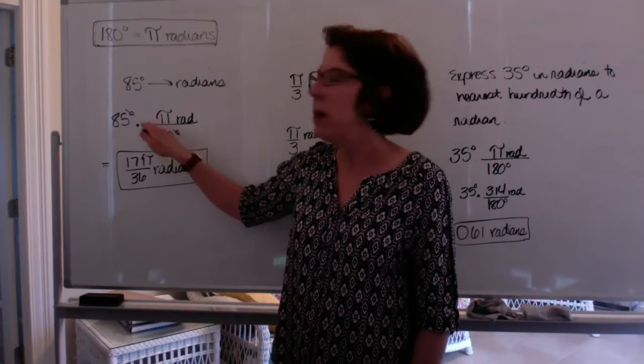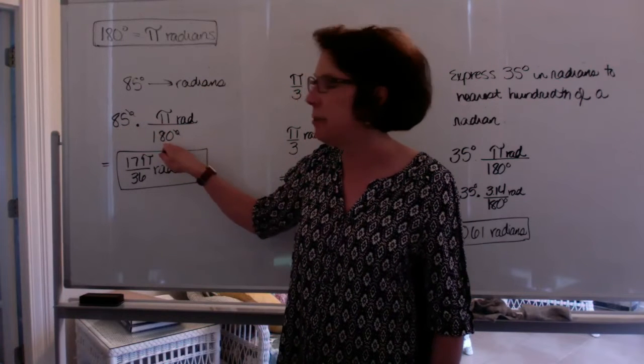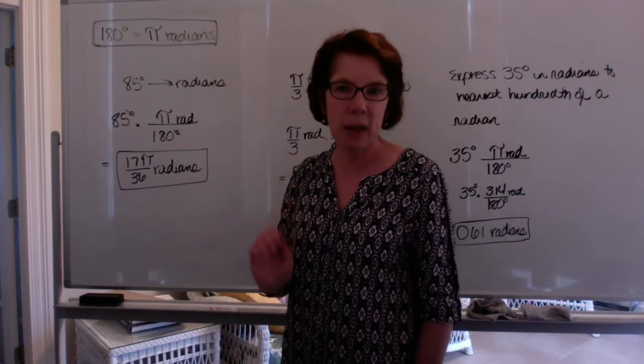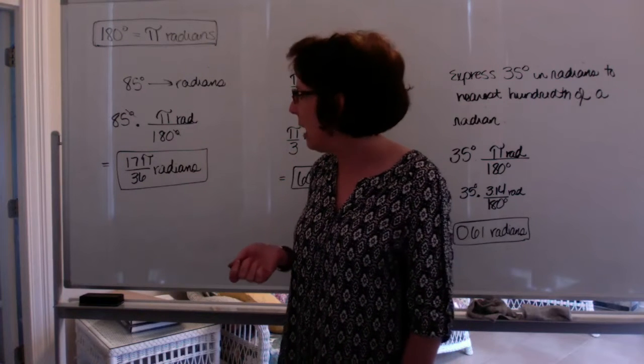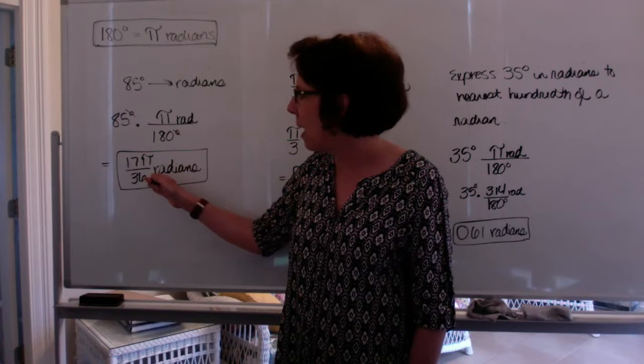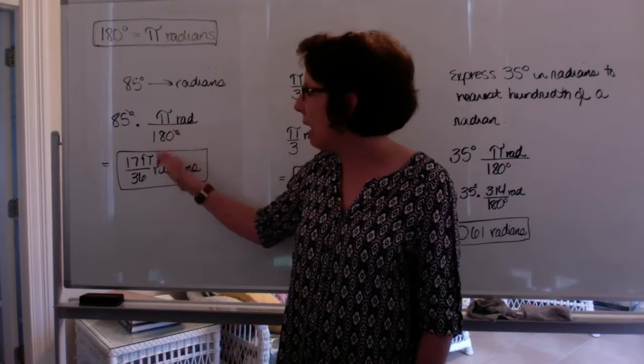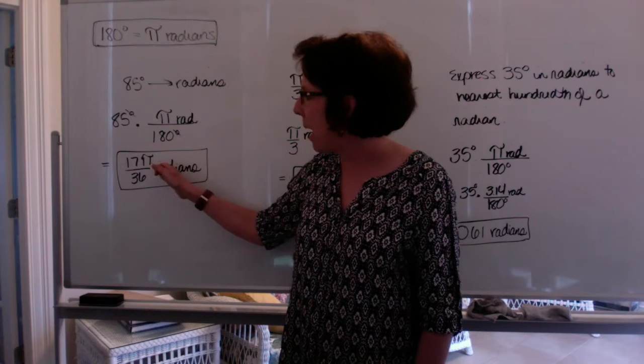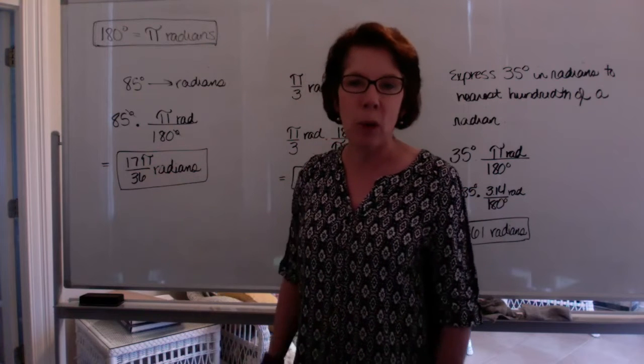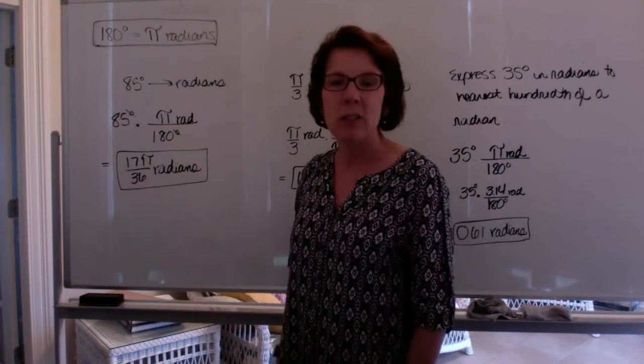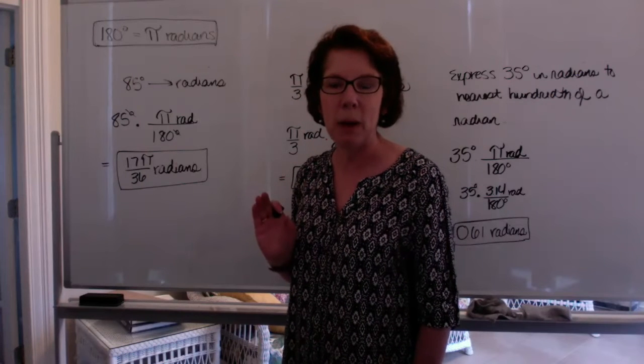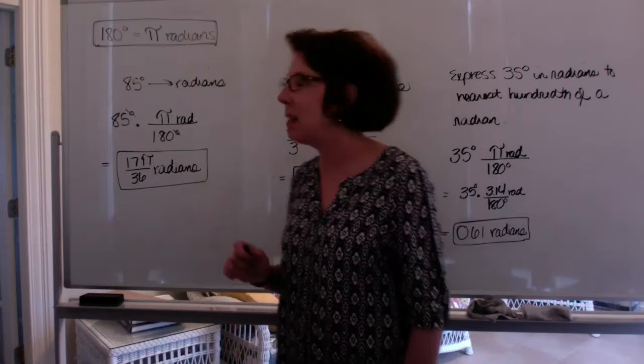So what happens is my degree units cancel out and I simply have to reduce 85 over 180. Now remember with your calculator, you can just do 85 divide by 180, hit enter, and then hit math, enter, enter, and it'll reduce your fraction. And this fraction is 17 over 36 in reduced form. Now notice that I have the pi left over. That's going to be in my answer here. And I leave pi in the numerator with the 17. So we just have one simple fraction with 17 pi in the numerator and 36 in the denominator, and that's our radians.